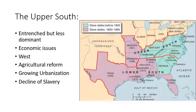Here we're going to see the institution of slavery is still entrenched but it's a bit less dominant. Part of the reason for this is the Upper South region generally lacks the really fertile soil that the Lower South has, as well as the long growing season that was really necessary for slave crops like cotton, rice, or sugar. Because of that, the institution of slavery is going to be less dominant and the demand for enslaved people is less.